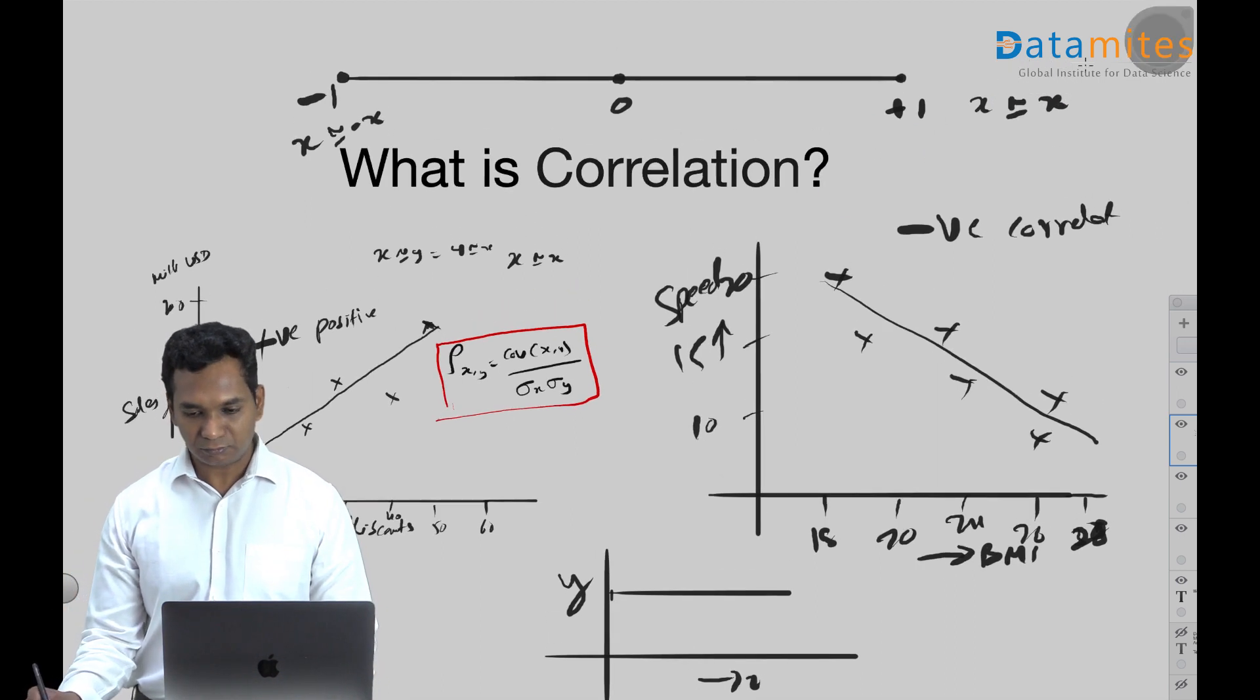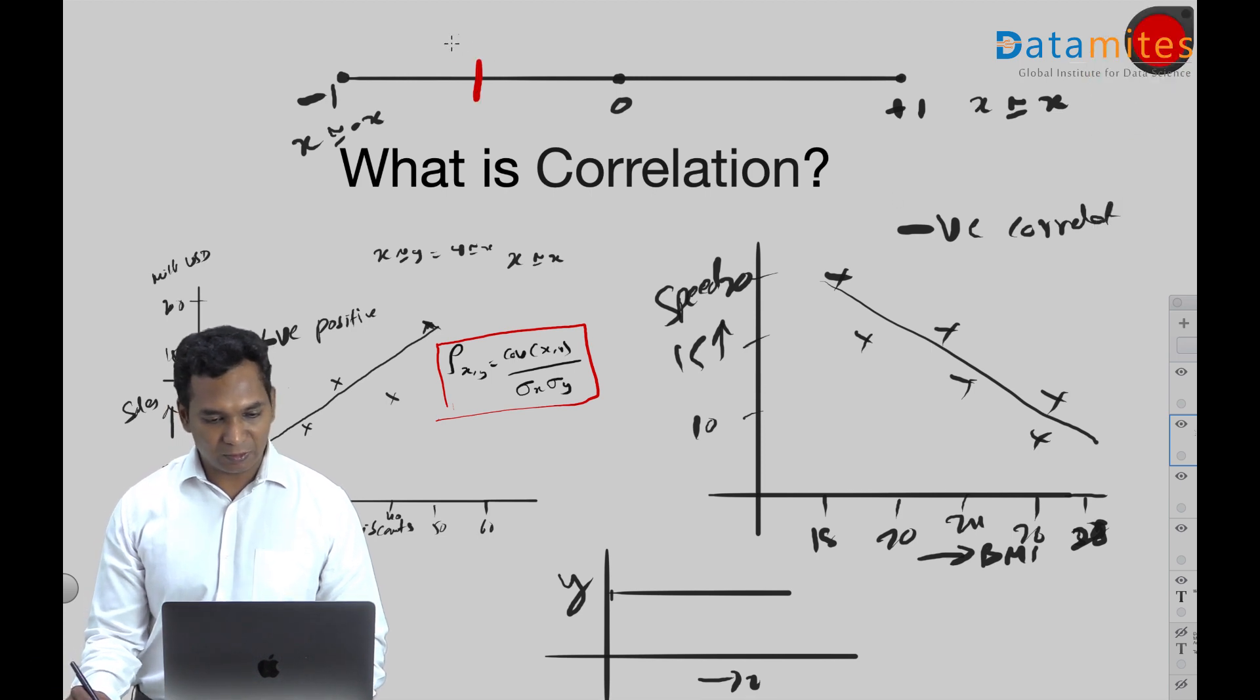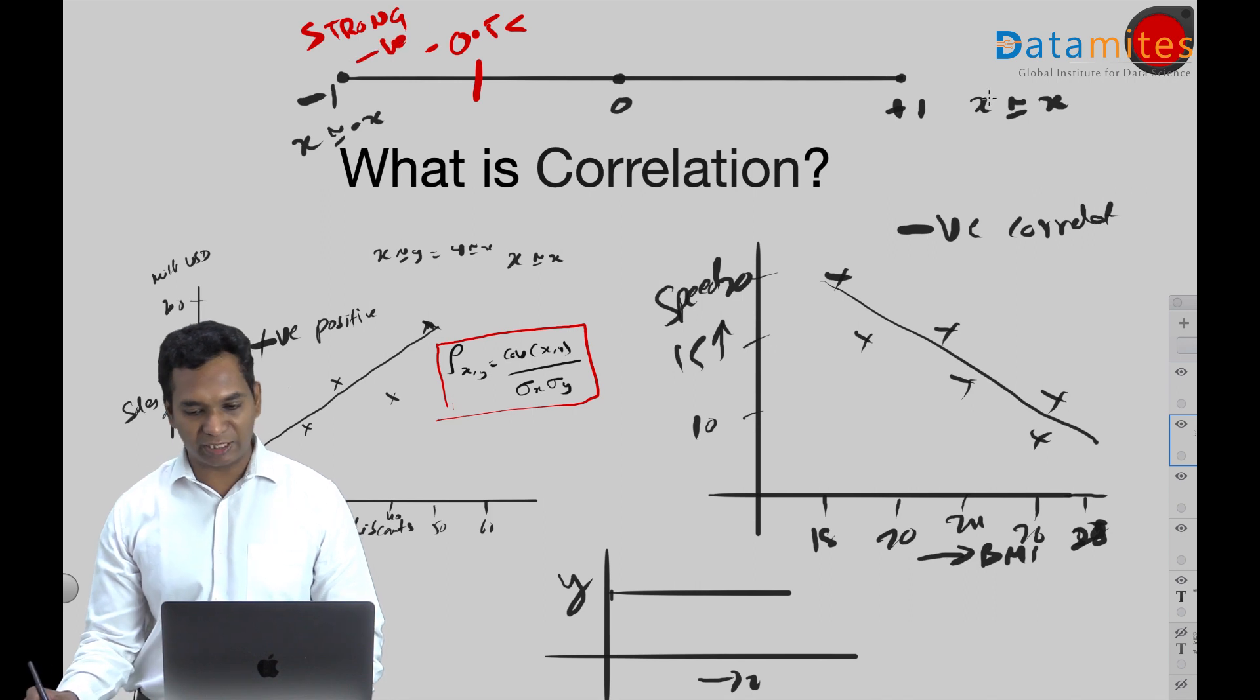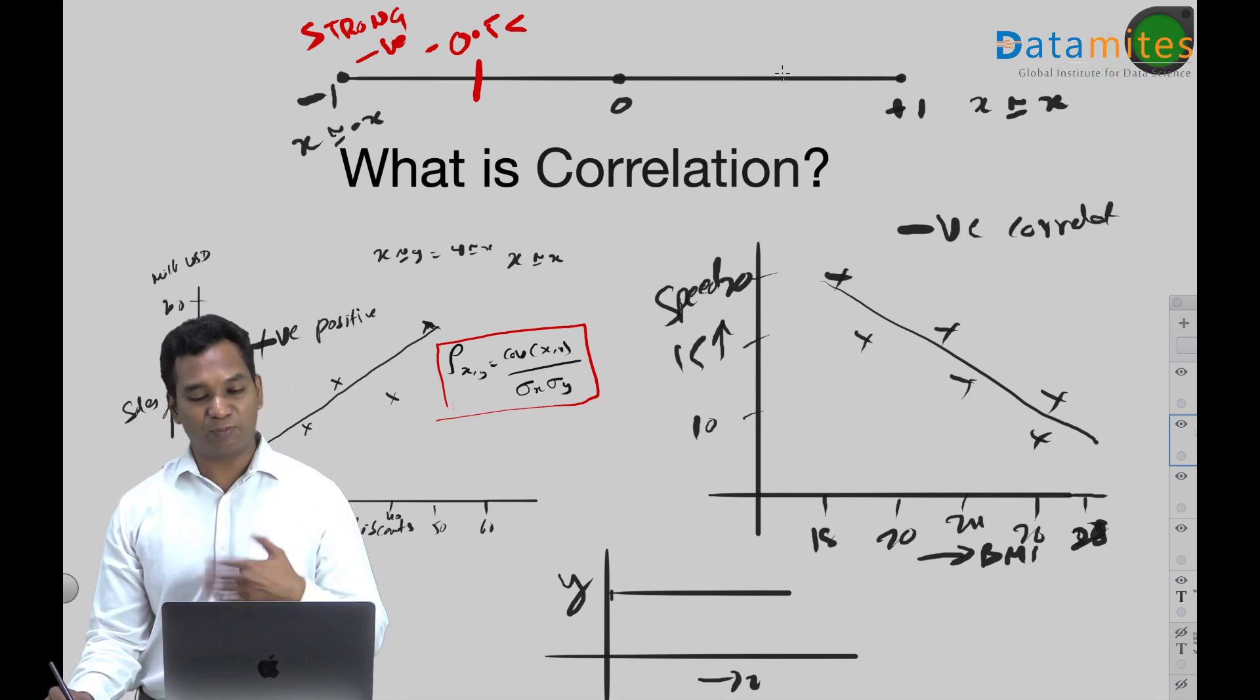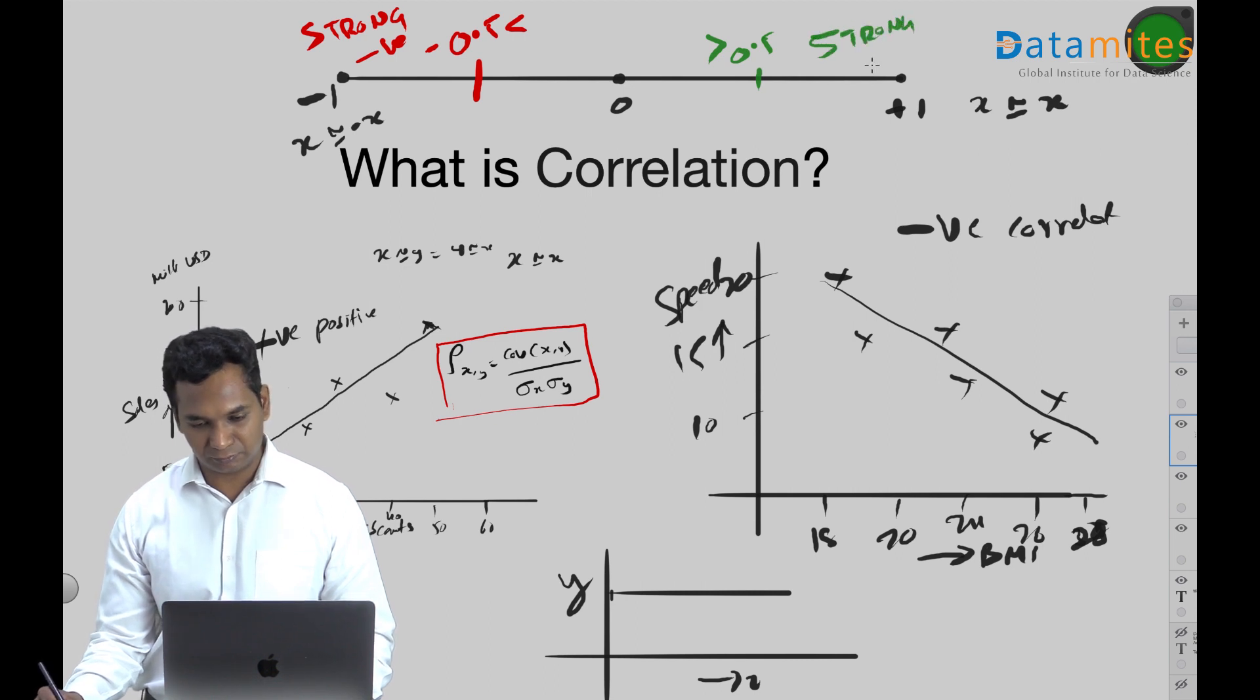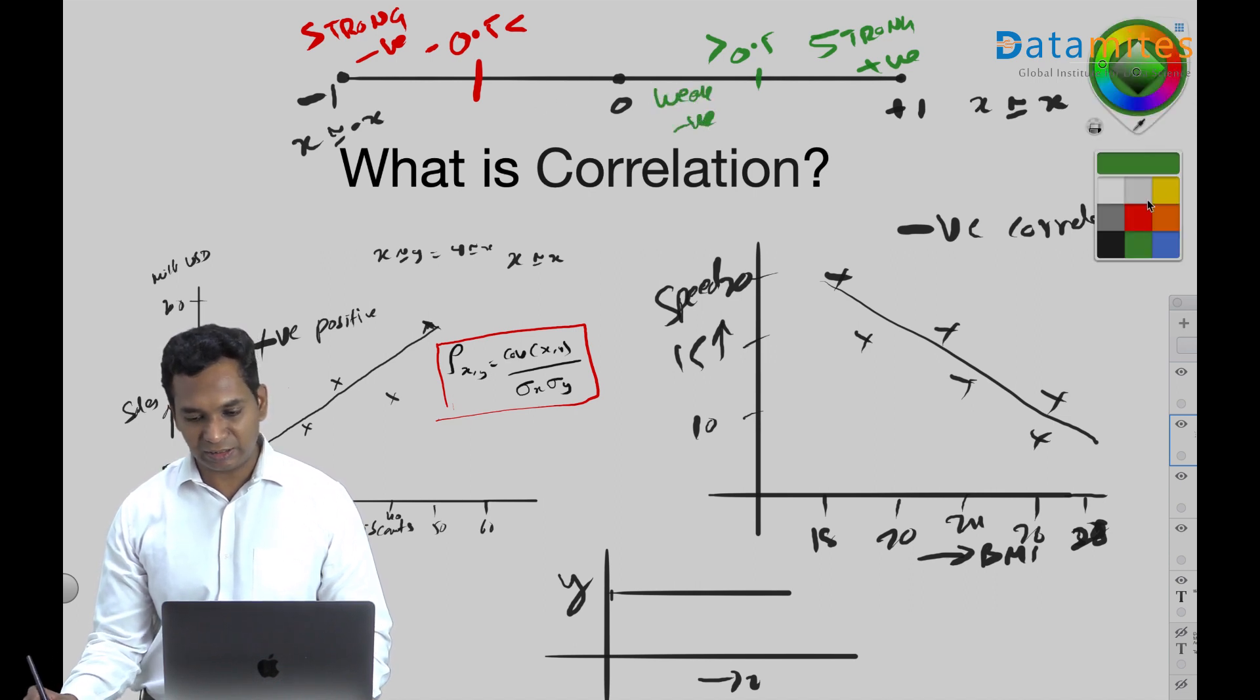And then all of the values - so anything less than minus 0.5 can be taken as strong negative correlation, and anything more than 0.5 or more than 0.6 is subjective, of course. So let's say more than 0.5 positive is taken as strong positive correlation. And in the middle, whatever value is, it is actually weak correlation. So weak positive, and this is weak negative.